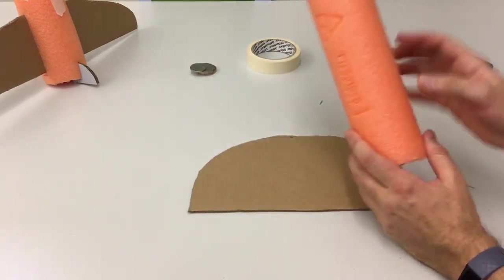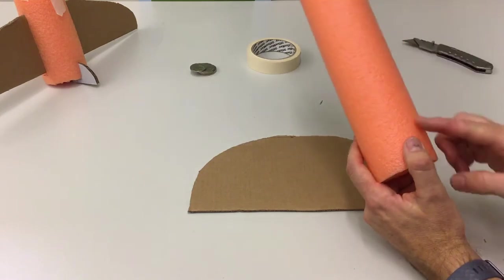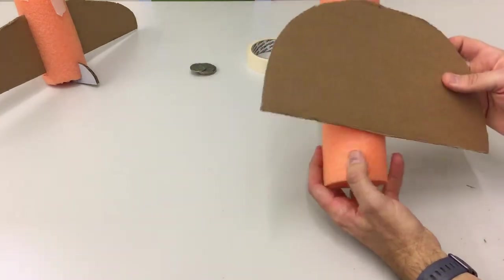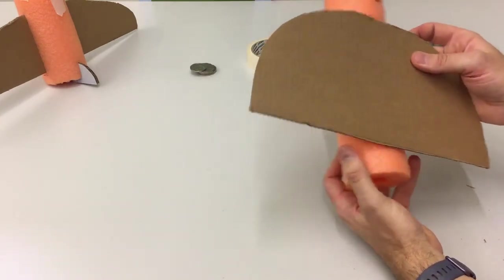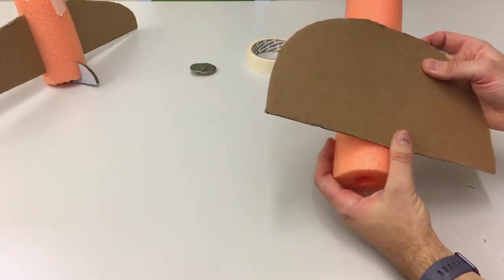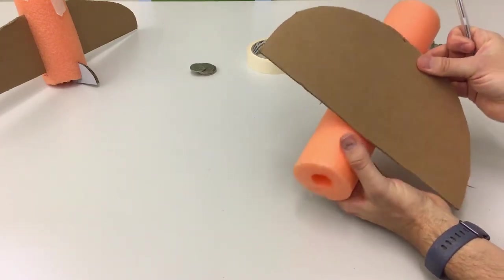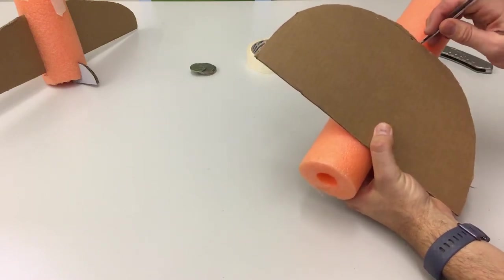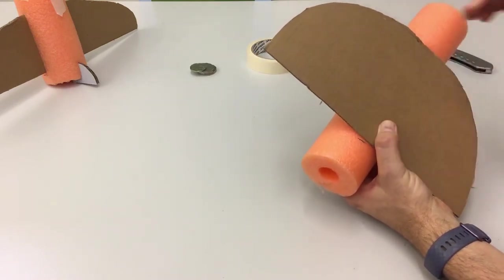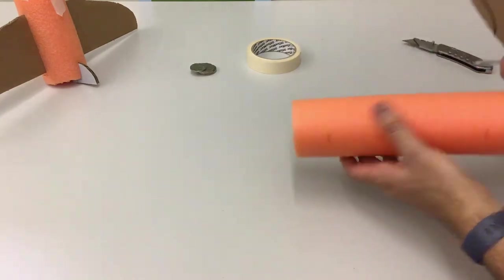Now we want to cut little slots in here to fit our wings. I'm going to put this here like this and mark approximately where I want it. Then I'm going to go around to the other side and mark approximately there.